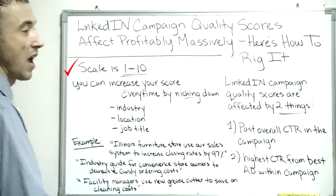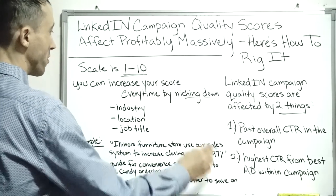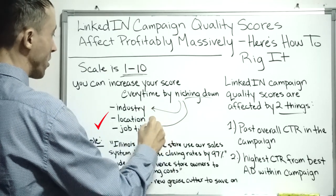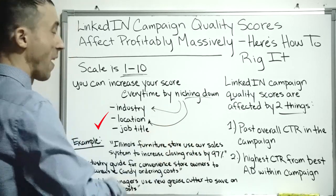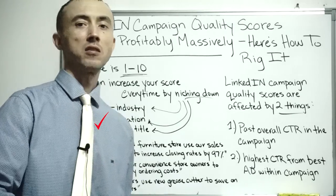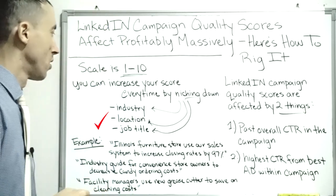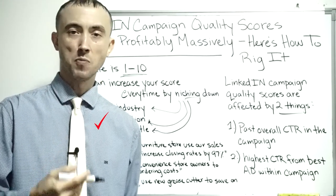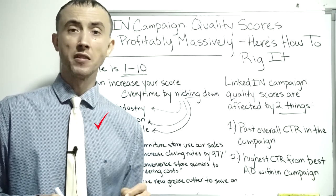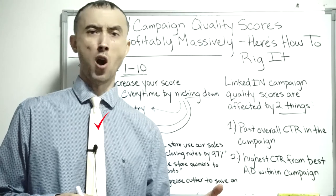If you're running ads already, niche down what you have. If you have a sales training service, instead of just saying that, say you have a sales training service in Illinois, or a sales training service for furniture stores. That automatically gets your click-through rate higher. Or say you have a sales training service that makes sales managers look like gold to their direct reports. The more honed in your message to whom you're targeting, the better your click-through rate is going to be every time. With how refined the targeting can be on LinkedIn, there's no reason why you can't do this — it just takes time.